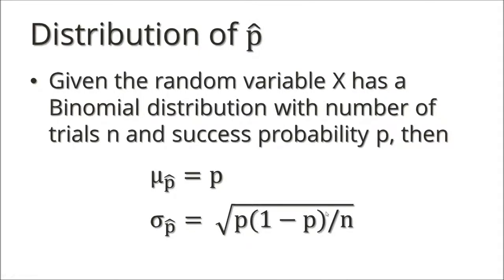Now for the distribution of p-hat — the sampling distribution of the sample proportion — given that x is binomial with n and p, the expected value or mean of p-hat equals p. Here, p is the proportion in the population — the success probability or proportion. So the expected value of p-hat is going to be the true value p, so it's unbiased. Two: the standard deviation of p-hat is going to be the square root of p times one minus p divided by n.